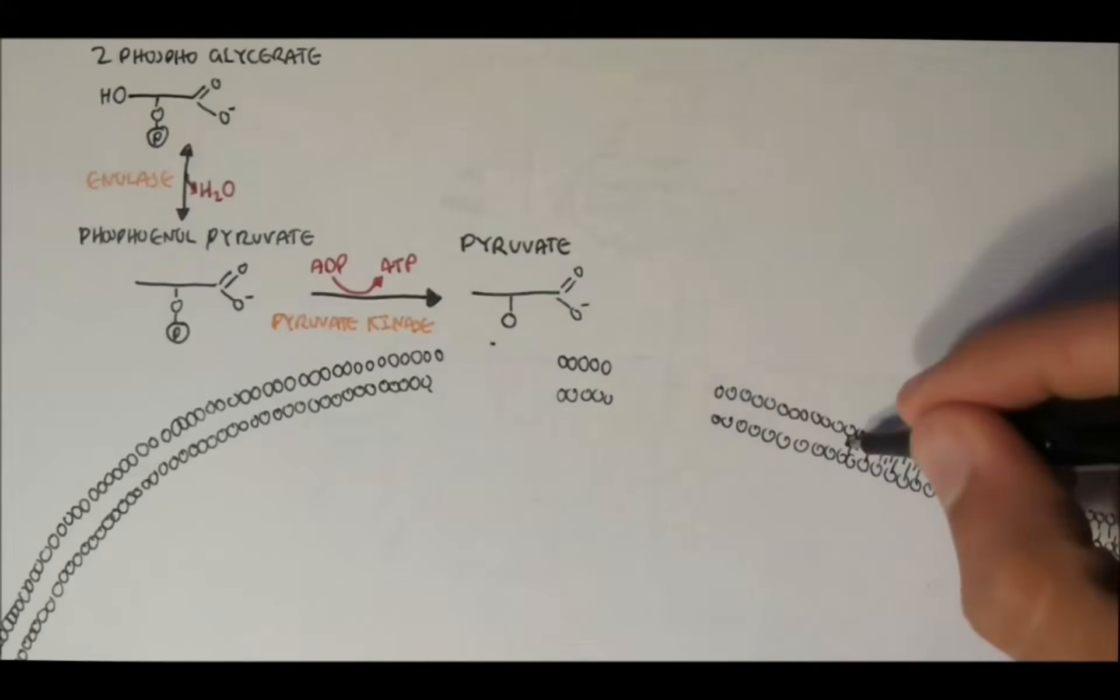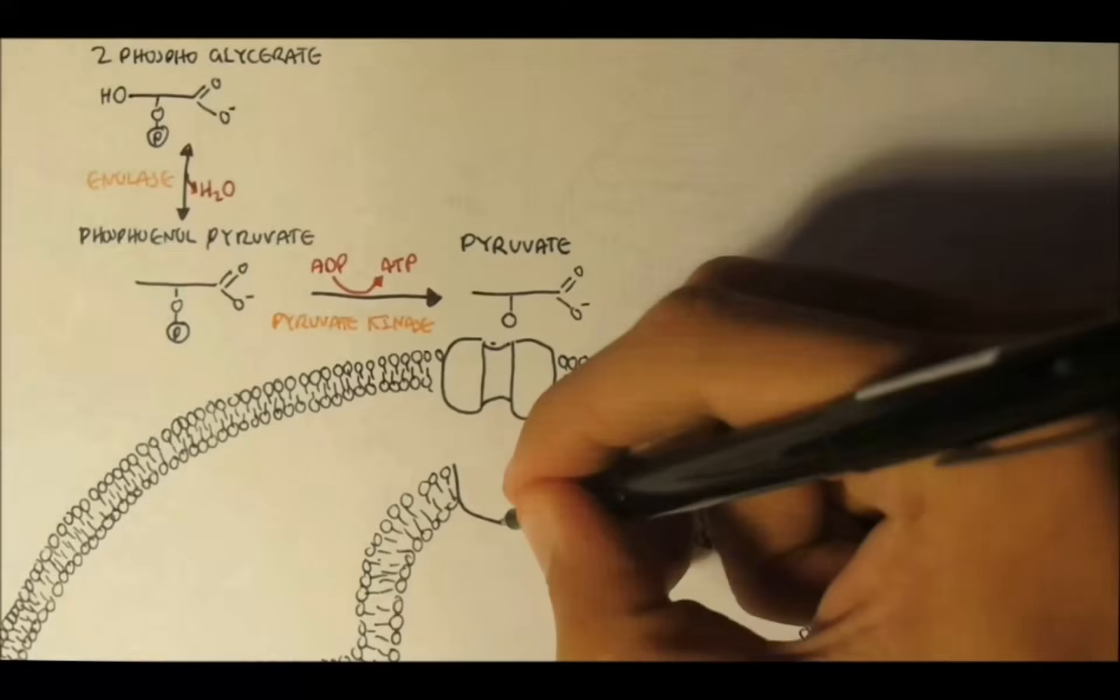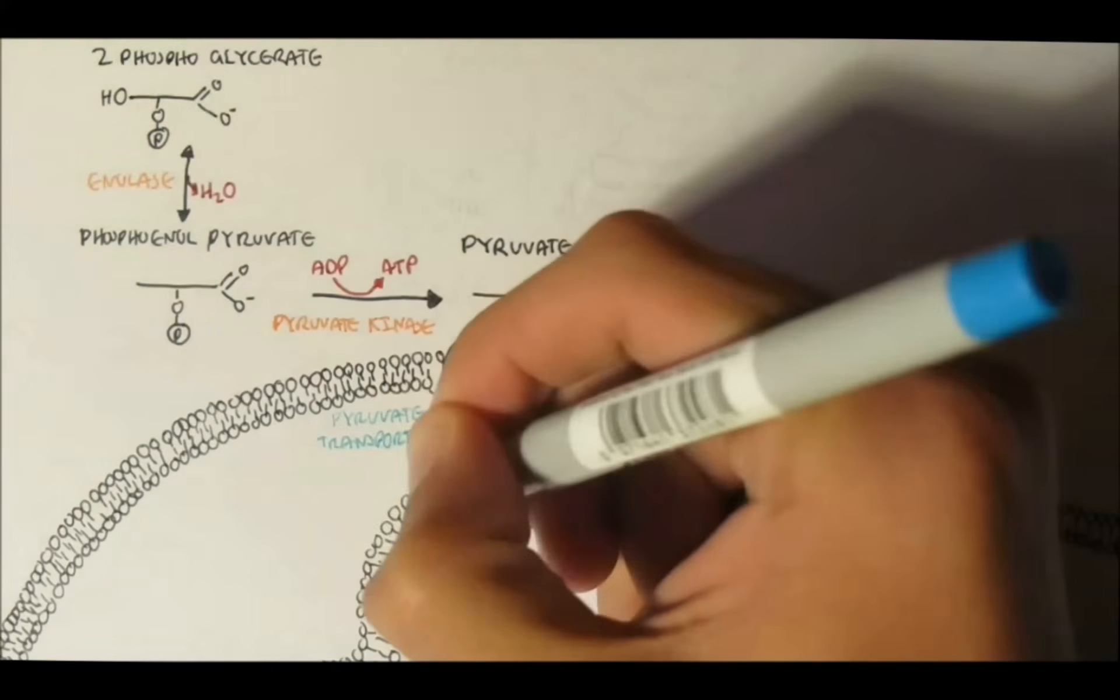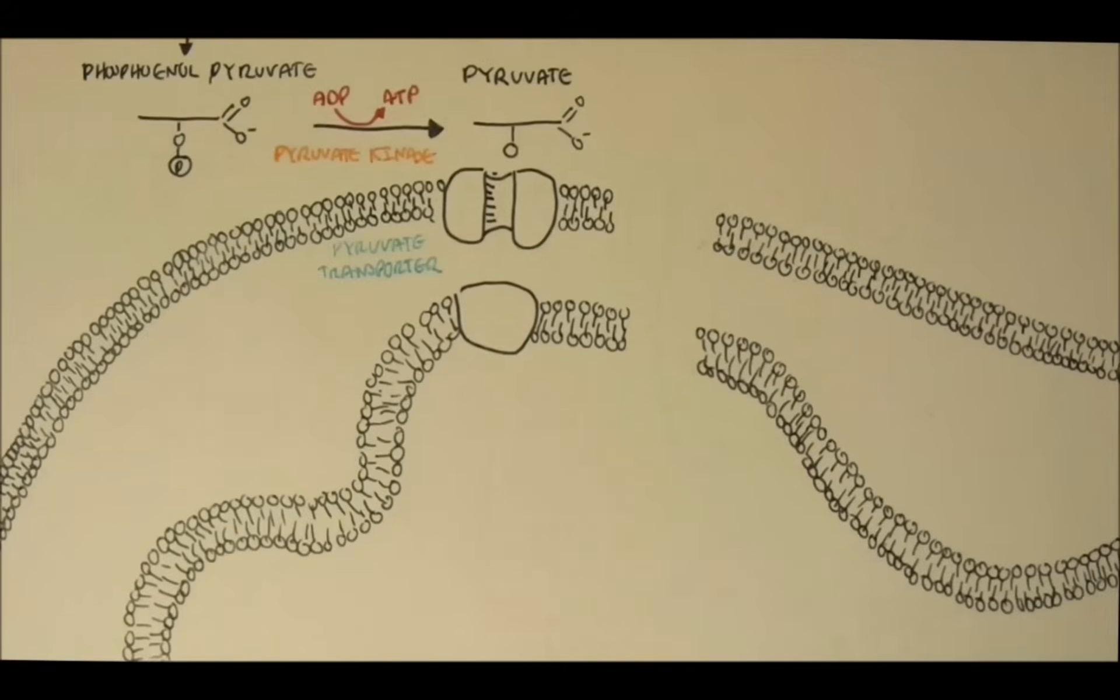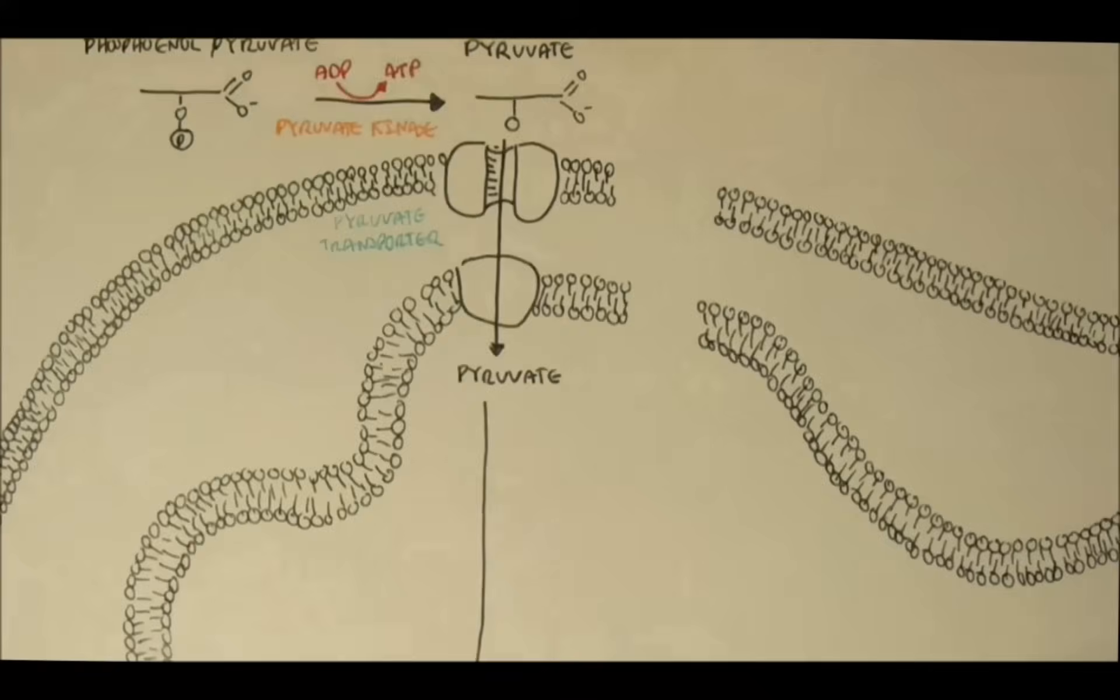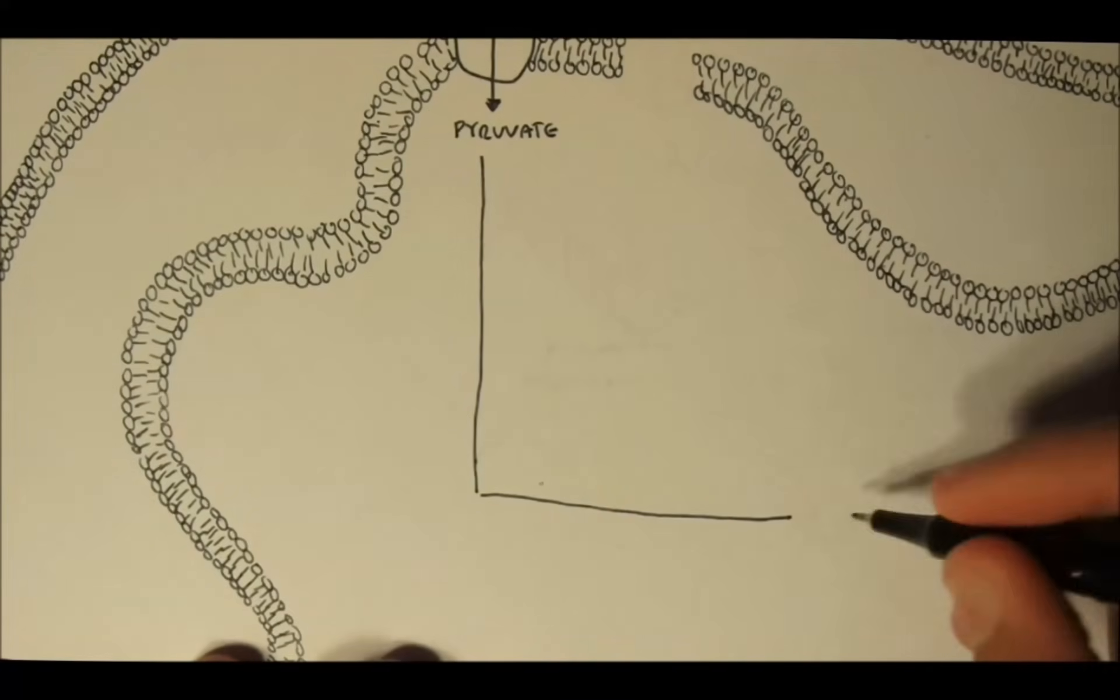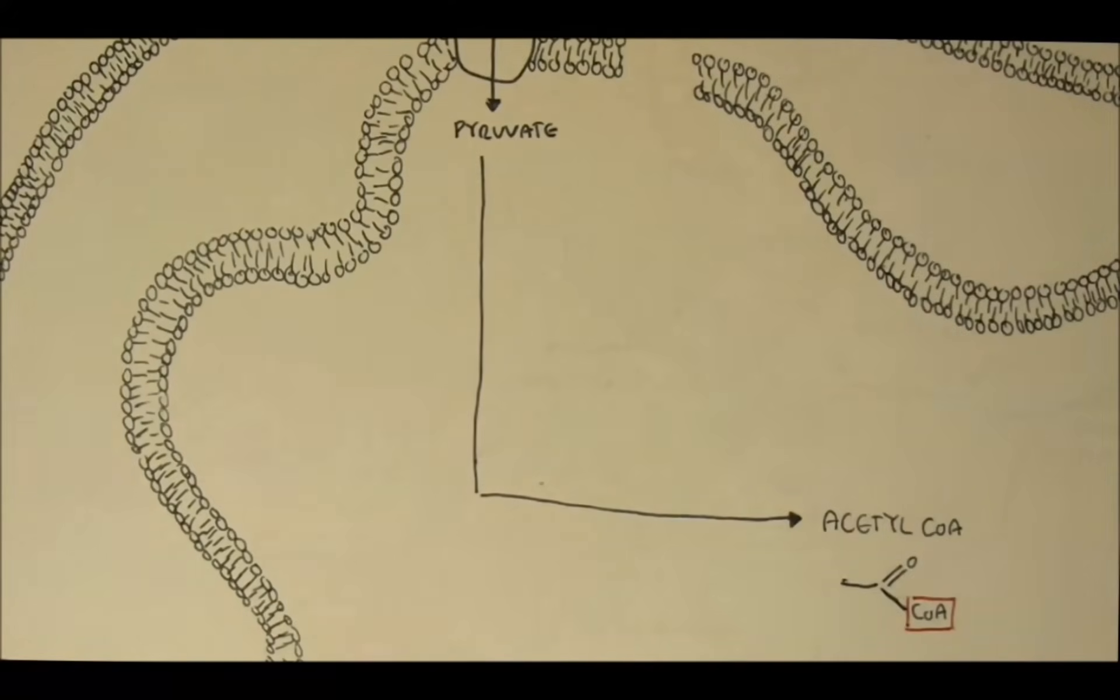So, the mitochondria here consists of 2 separate membranes, the outer membrane and the inner membrane. Pyruvate enters the mitochondria through the pyruvate transporter, through the outer membrane and the inner membrane. So, pyruvate is now inside the mitochondria. And pyruvate will then convert to acetyl-CoA, releasing carbon dioxide, CO2, with a pyruvate dehydrogenase complex, the enzyme. Now, it's a large complex because it consists of 3 enzymes.